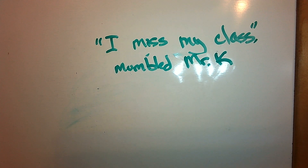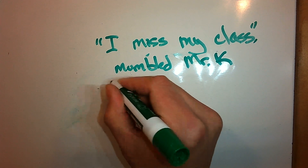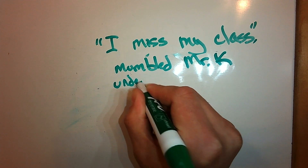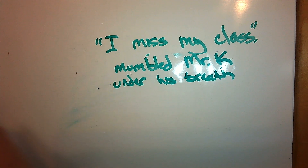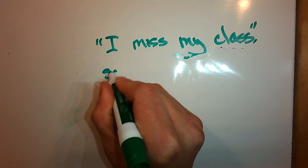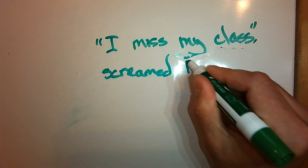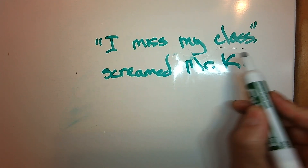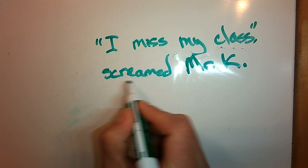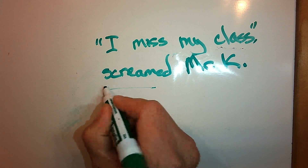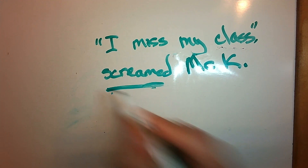And then you can even add more. 'I miss my class,' mumbled Mr. K — so he's saying it softly, maybe under his breath. Or what if he screamed it because he's so angry? 'I miss my class!' screamed Mr. K. Now he's not sad — he's angry. So if you change that word in the attribution, the part that says who says it, you can change how your character is feeling.